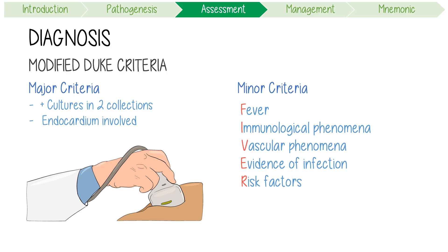The criteria is fulfilled if you have two major criteria, or all five minor criteria.